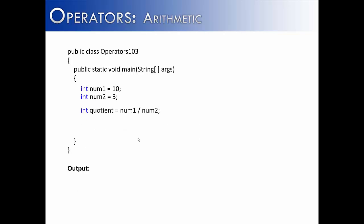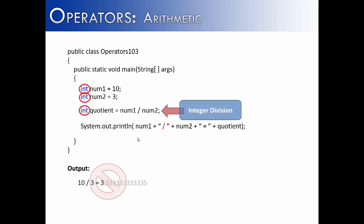Division in Java can be interesting because there are really two types: integer division and real division. When we have num1 divided by num2, you would think that 10 divided by 3 would yield 3.3 continuing. But in Java it would not — it would give us 3. The reason is, when you take an integer, divide it by another integer, and store it as an integer, you're going to get integer values. That decimal place is going to be truncated — just lopped off — and the remainder would just be discarded. So 10 divided by 3 would not be 3.3; it would just be 3.